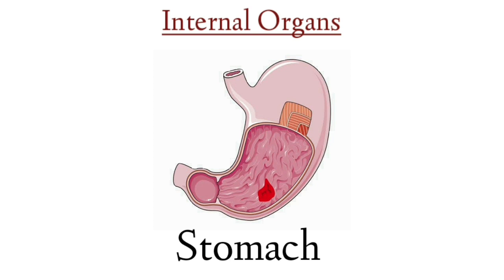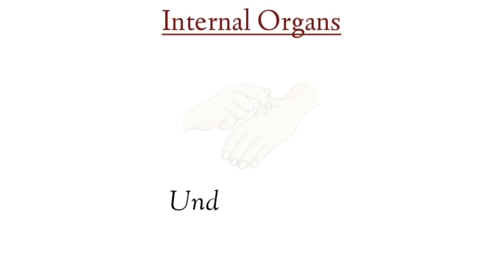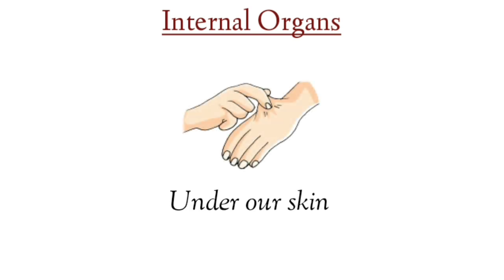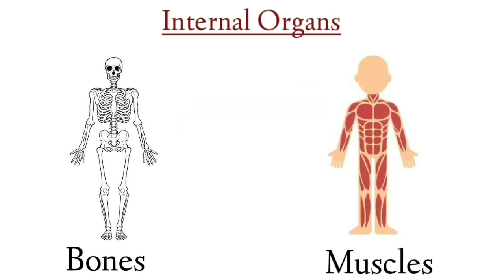You know children, under our skin we have bones and muscles. All bones together make a skeleton. Skeleton gives shape to our body. Muscles are attached with our bones and help in the movement of body parts.